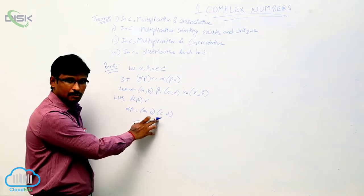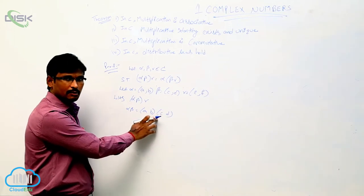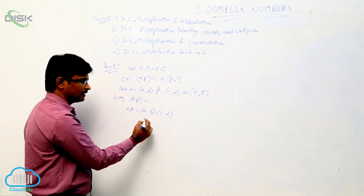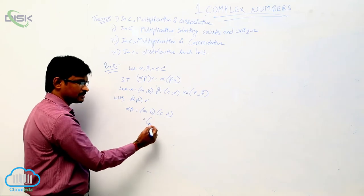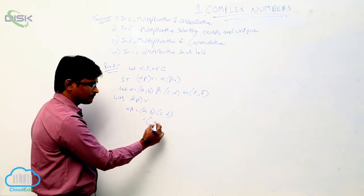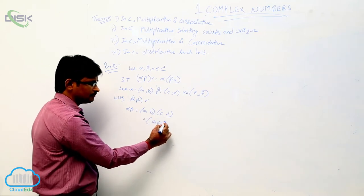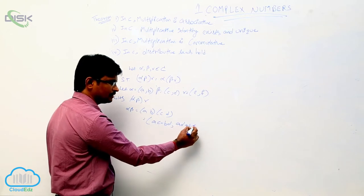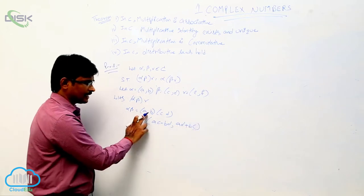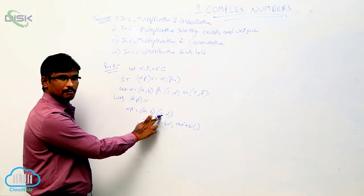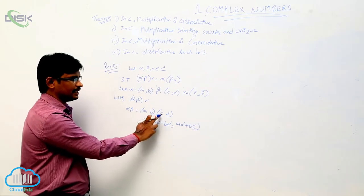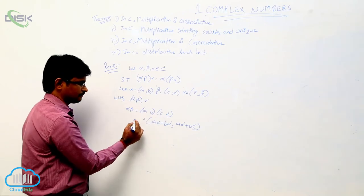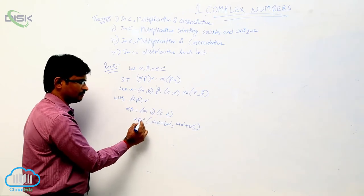And we know that in multiplication, (a, b) into (c, d) gives the result (ac minus bd, ad plus bc). So alpha beta equals (ac minus bd, ad plus bc).